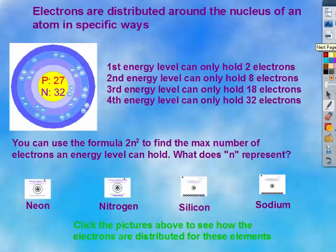So the electrons are distributed around the nucleus of the atom in specific ways. The first energy level holds 2 electrons. The second energy level can hold 8 electrons. The third energy level can actually hold 18 electrons, and the fourth energy level can hold up to 32 electrons.